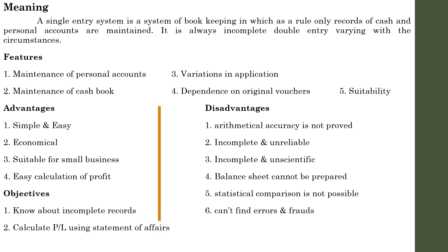Second objective: we need to calculate profit and loss using the Statement of Affairs method. In Single Entry System, we cannot easily find out profit and loss. We have mentioned that with the help of opening and closing capital, we can find the profit. But in order to know the exact profit of a business that follows a Single Entry System, you have to implement the method of Statement of Affairs account. We will discuss the Statement of Affairs method in detail in future classes. We prepare a Statement of Affairs to identify whether the business is earning profit or loss under a Single Entry System. Remember the term Statement of Affairs — it is prepared to identify the profit or loss of a concern that follows a Single Entry System.